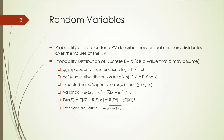Conventionally, we use capital X or other capital letters to represent a random variable, and use lowercase x or other lowercase letters to represent any possible value of the random variable. PMF is often written as lowercase f of lowercase x, which is the probability that the random variable takes the value of lowercase x. And CDF is commonly written as capital F of lowercase x, which is the probability that the random variable takes a value less than or equal to lowercase x.